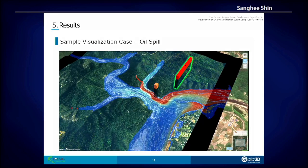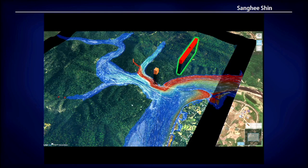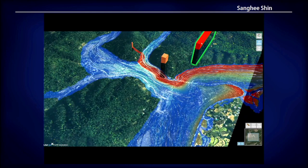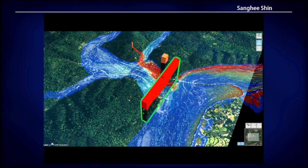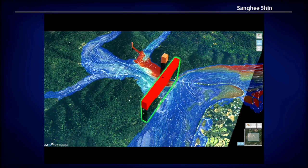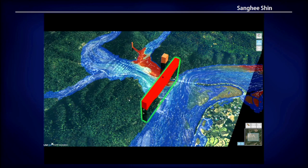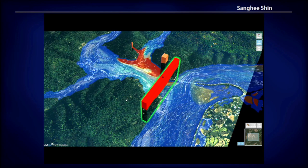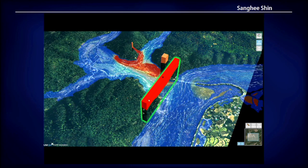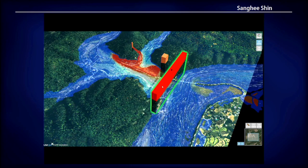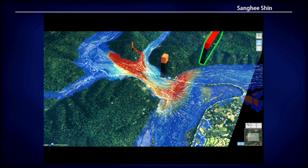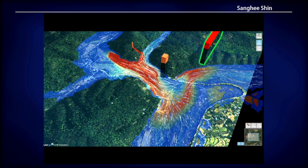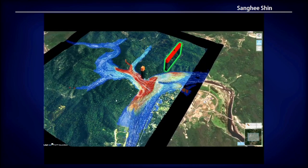The second one is the oil spill or pollutant spill simulation. Let's imagine there is some oil factory and they spill oil through the river. We can see this kind of thing on your web browser — how the pollutant travels through the river.